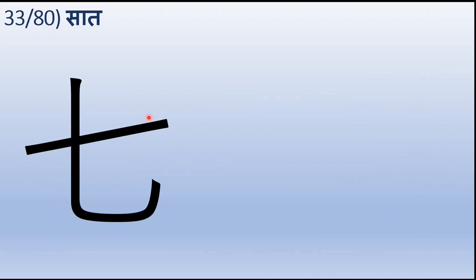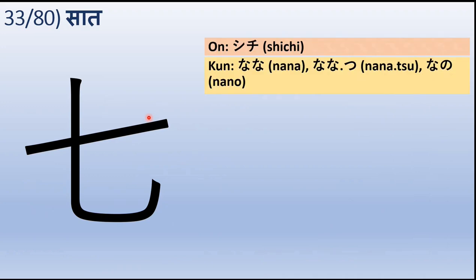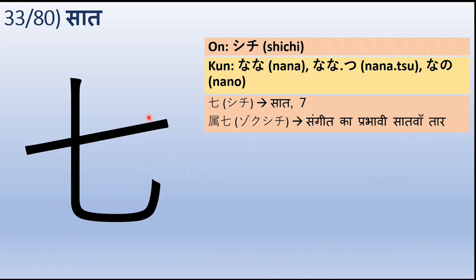Agli kanji hai saat ki, jise hum onyomi mein Shichi kahte hain aur kunyomi mein Nana. Shabd ke anusaar aur prayog ke anusaar, isse nanatsu ya nano bhi kaha ja sakta hai. Onyomi mein iska arth hai — Shichi ka arth hai saat. Aur isse hum Zoku-shichi bhi kahte hain — zoku-shichi yaani ki sangeet ka prabhavi saat swar, yaani the seventh chord.